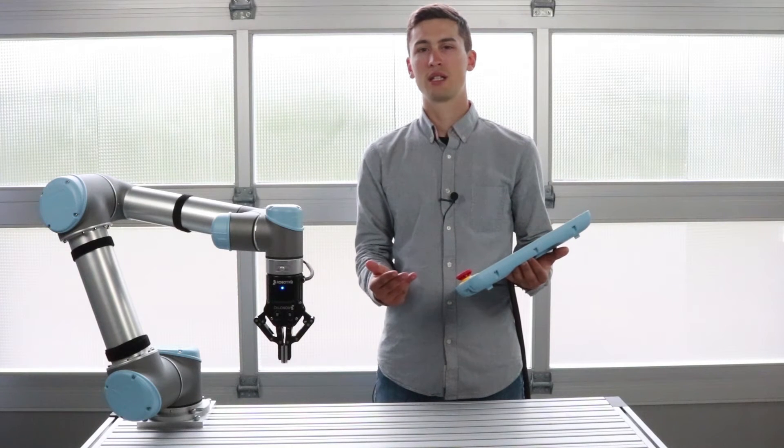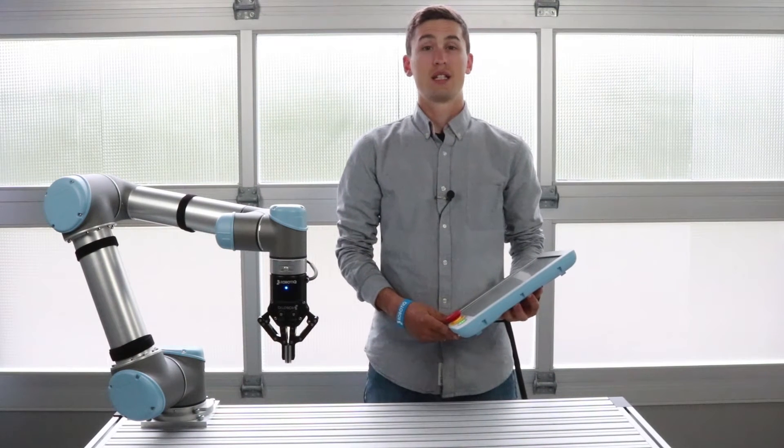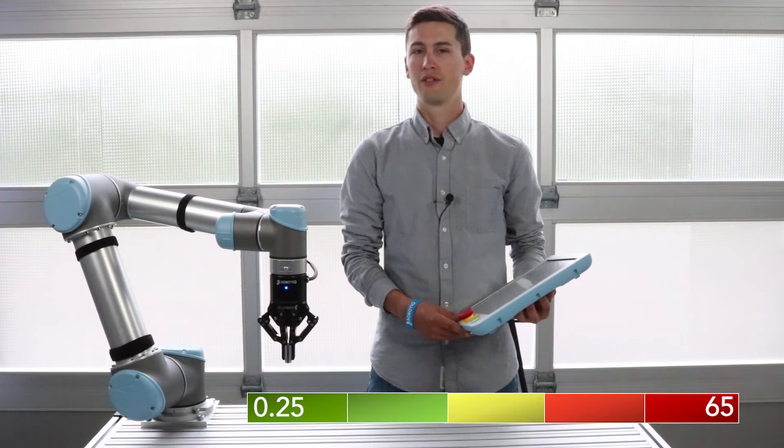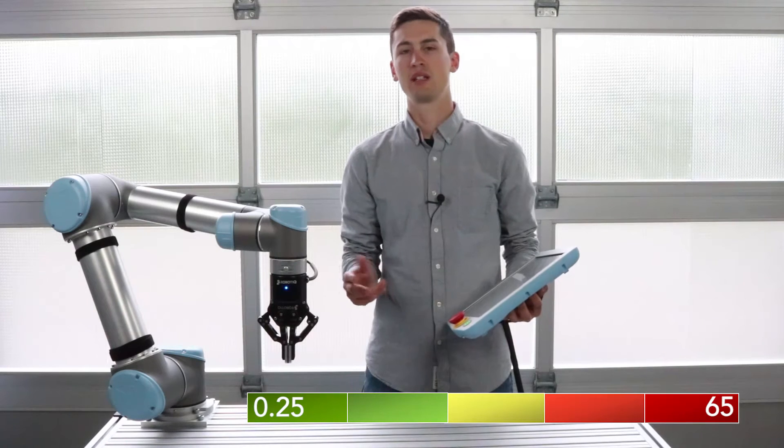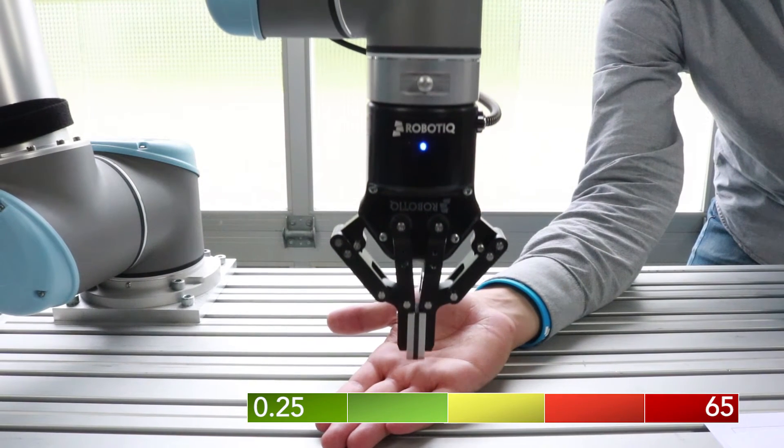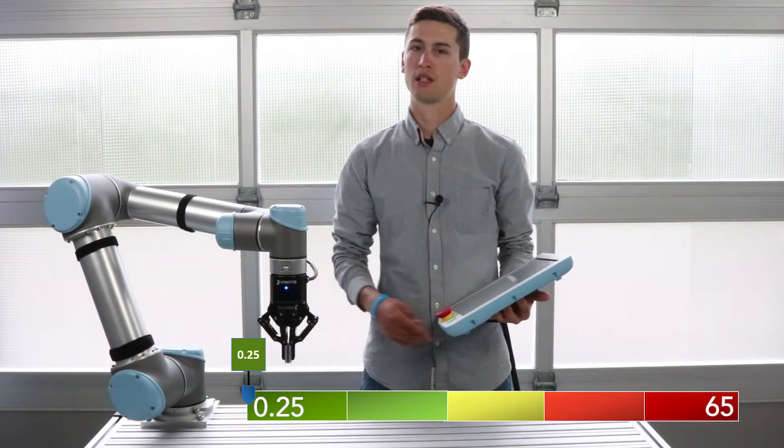Let's take the simple example of a gripper hitting my hand against the table. The severity of injury is rated from 0.25 to 65, the lowest being a scratch or a bruise, the highest being catastrophic. In this case, the pain level is not even reached when the robot stops, so a rating of 0.25 is accorded to this risk.